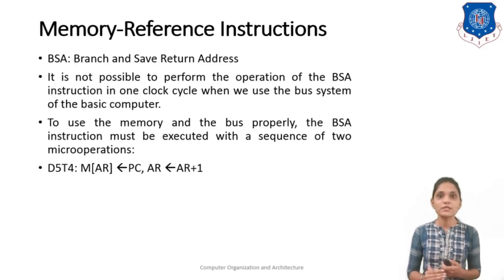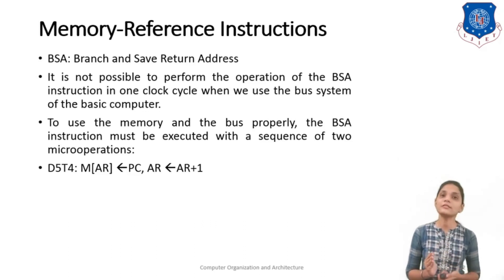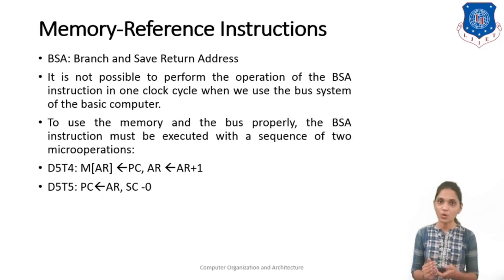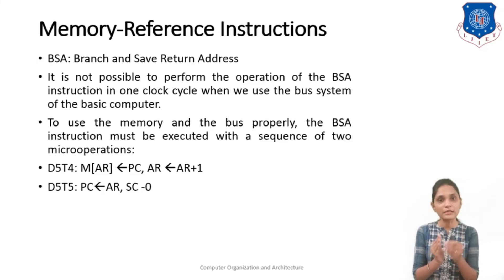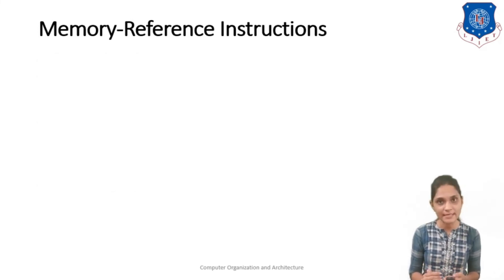To use the memory and bus properly, the BSA instruction executes with a sequence of two micro-operations: at D5·T4, the Program Counter is stored at the memory location given by AR, and then AR is incremented by 1 and stored into the Program Counter, then the Sequence Counter is cleared to 0. Actually two timing signals are required because you can't directly increment the content of PC — you have to first increment AR and then store it into PC.